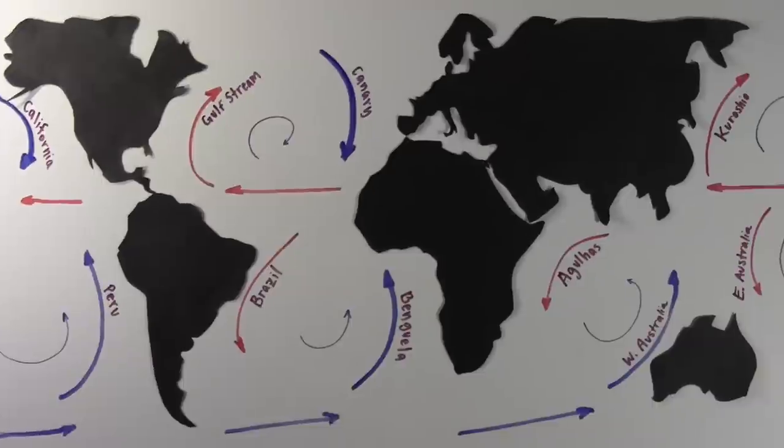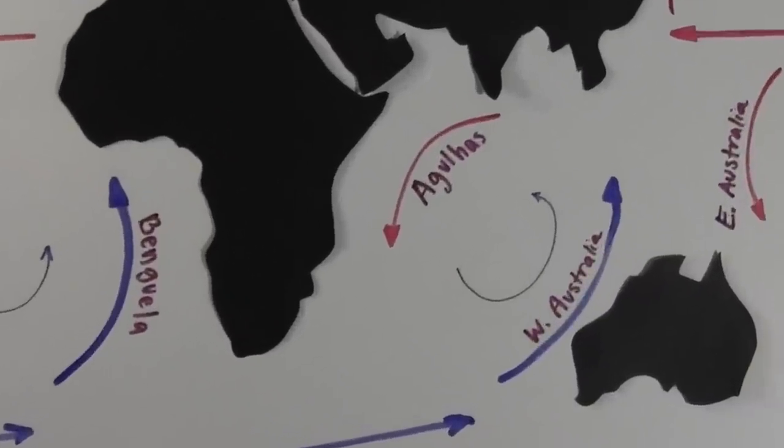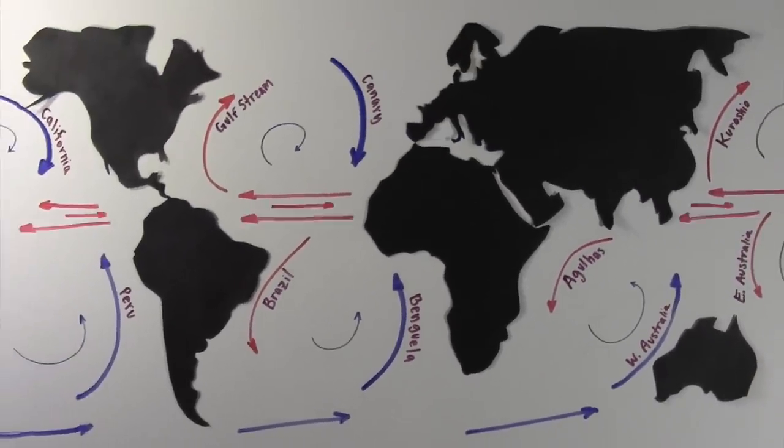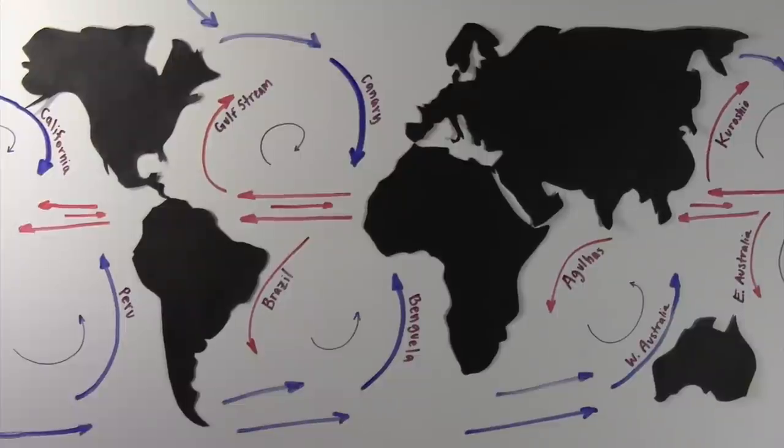And finally, the Indian Ocean contains the Agulhas Current and the West Australian Current. These horizontal flow patterns circulate water across the surface ocean.